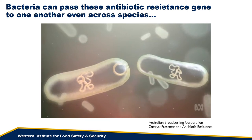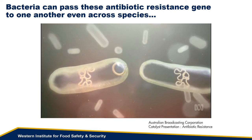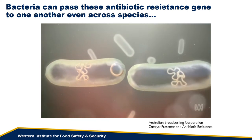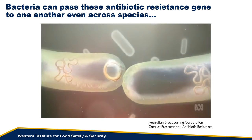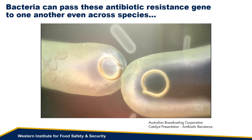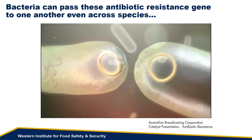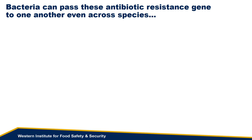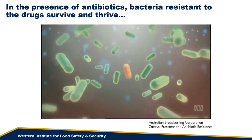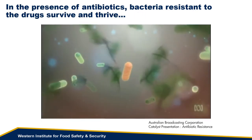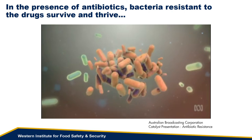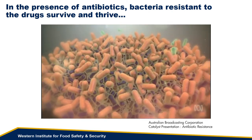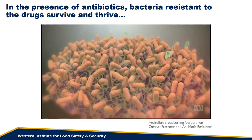Importantly, DNA coding for these different resistance mechanisms can be passed directly from one bacteria to another. This allows transfer of various resistance mechanisms and can occur even between very different types of bacteria, such as between staph, strep, and E. coli. In the presence of an antibiotic, bacteria that cannot survive will die, while those that are resistant to it will survive, thrive, and outcompete the remaining bacteria.